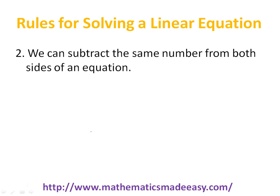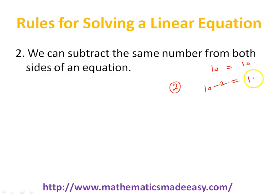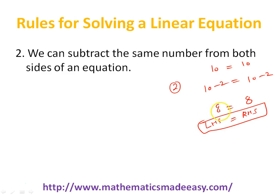Let's go to another rule. We can subtract the same number from both sides of an equation — this is similar to the previous one. There we could add the same number on both sides; here we can subtract the same number from both sides. Suppose I have the equation 10 equal to 10. If I subtract 2 from both sides: 10 minus 2 on the left and 10 minus 2 on the right. That gives 8 equal to 8. So the left hand side and right hand side are still the same even after subtracting the same number.